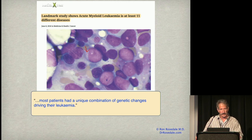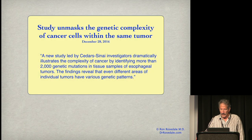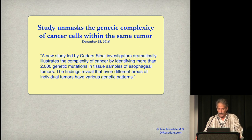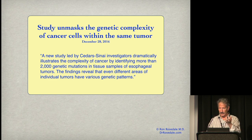That's really important. If it were a genetic disease, every case would be a different genetic disease. A study at Cedars-Sinai identified more than 2,000 genetic mutations in tissue samples of esophageal tumors. Even different areas of individual tumors have various genetic patterns. And I should mention that in non-cancerous esophagus, they find almost the same thing.